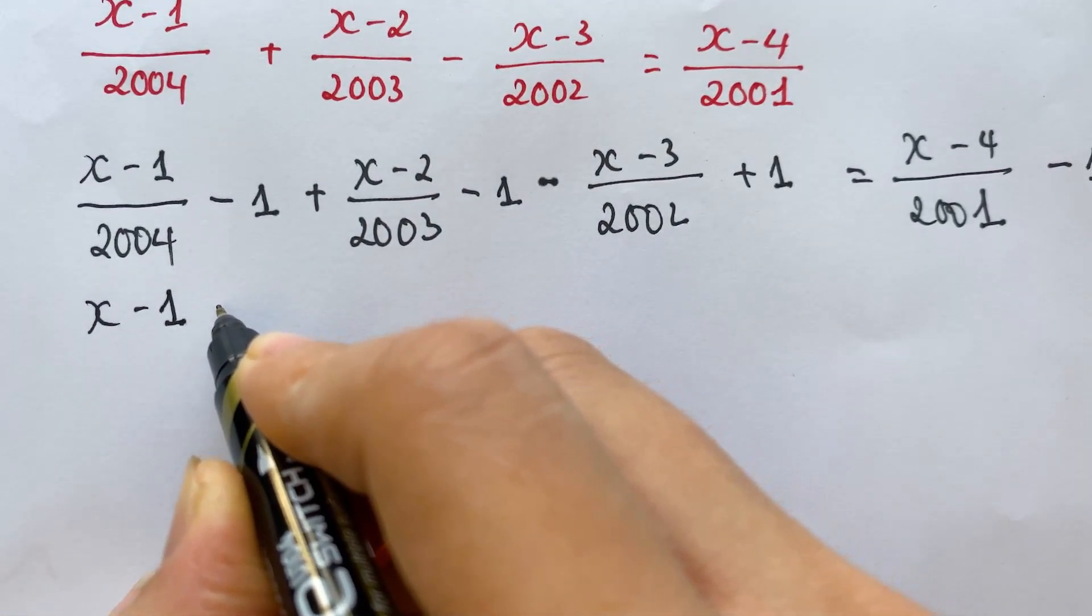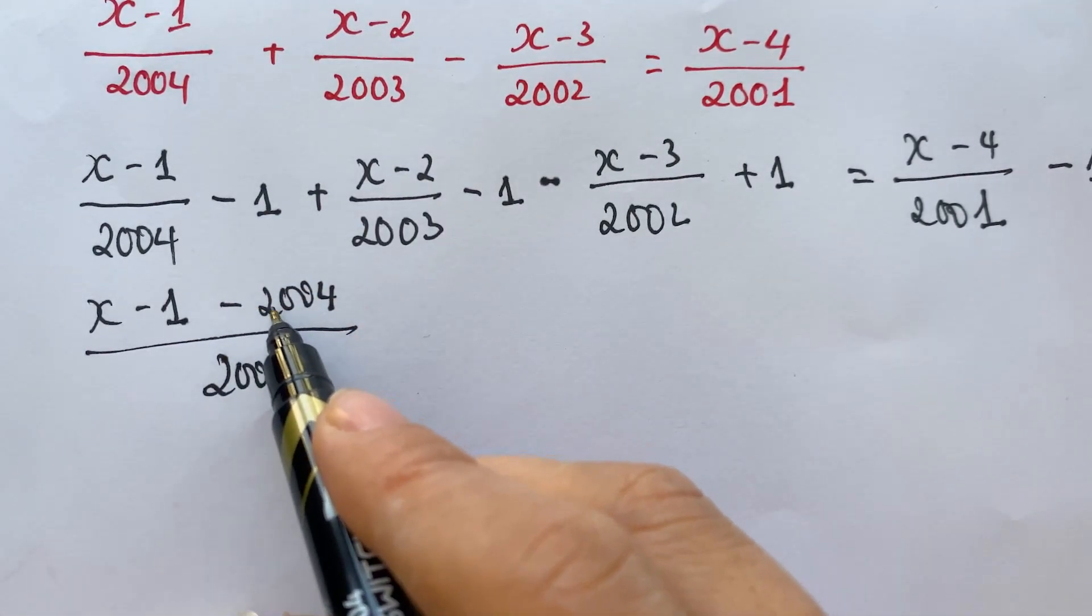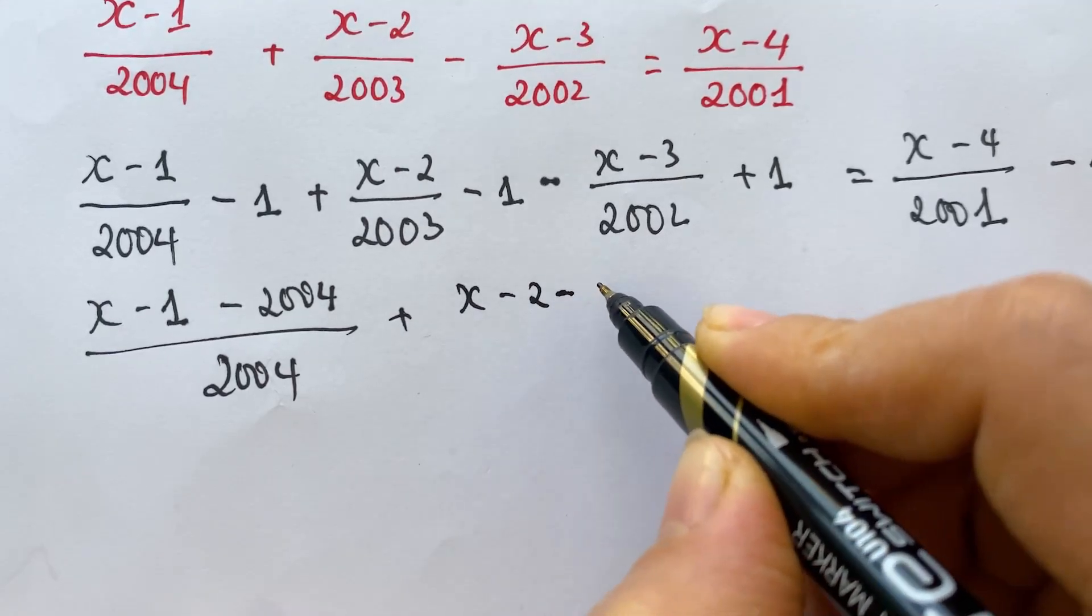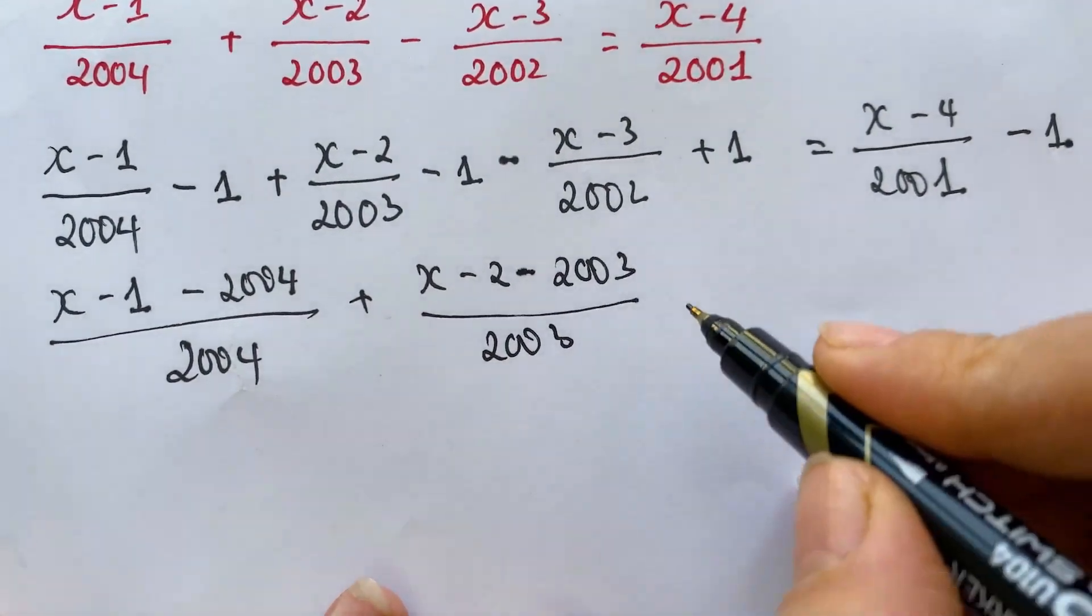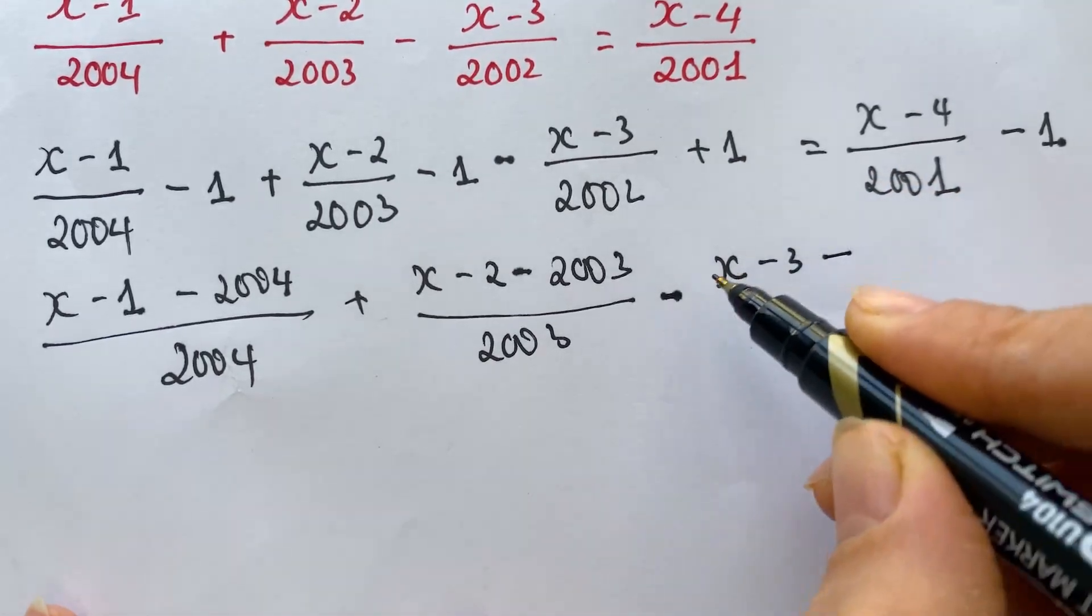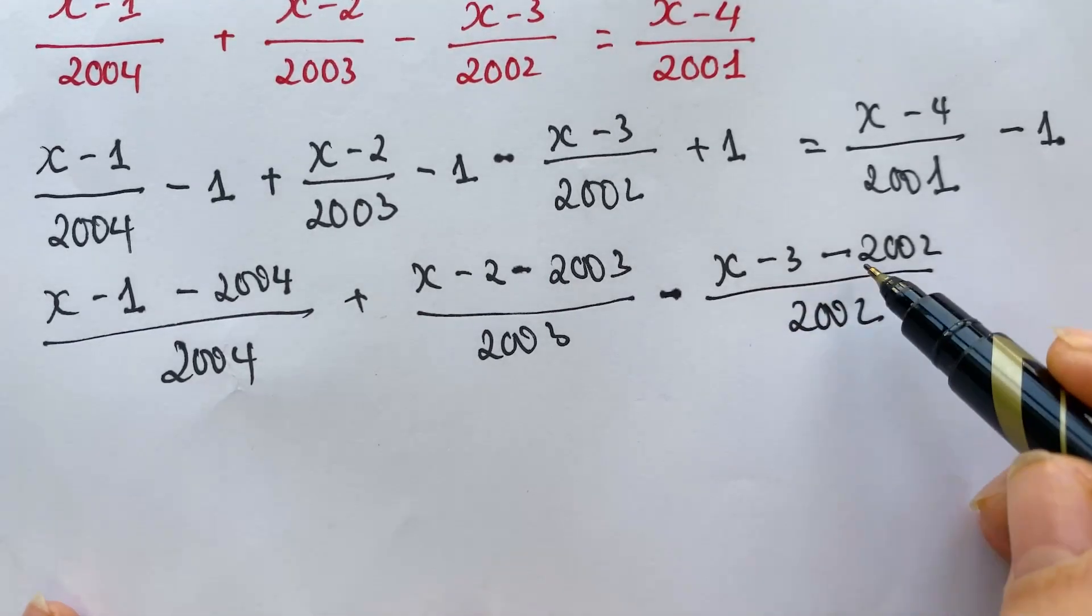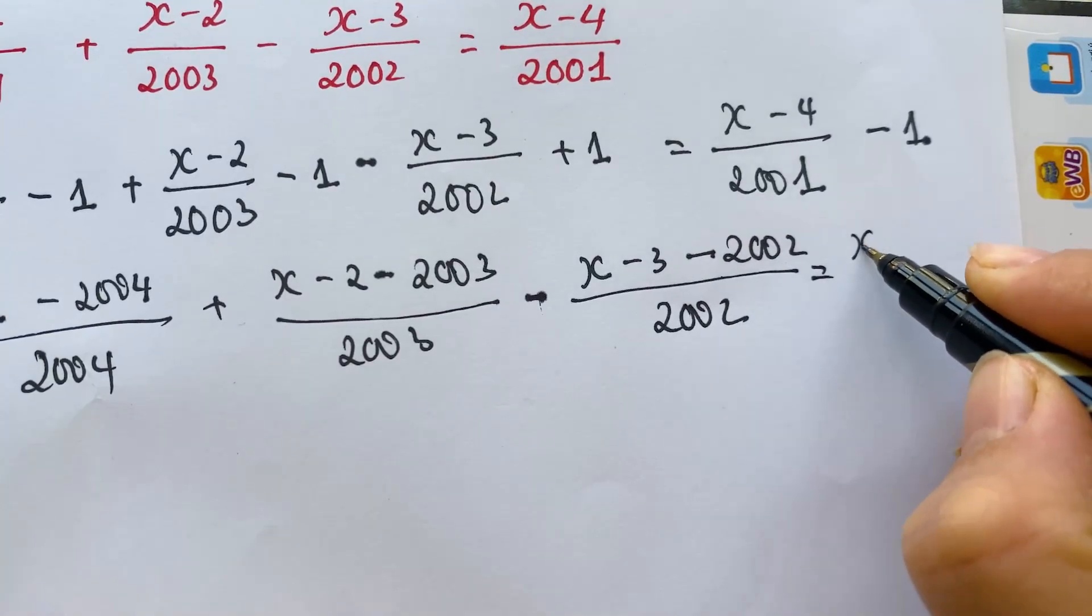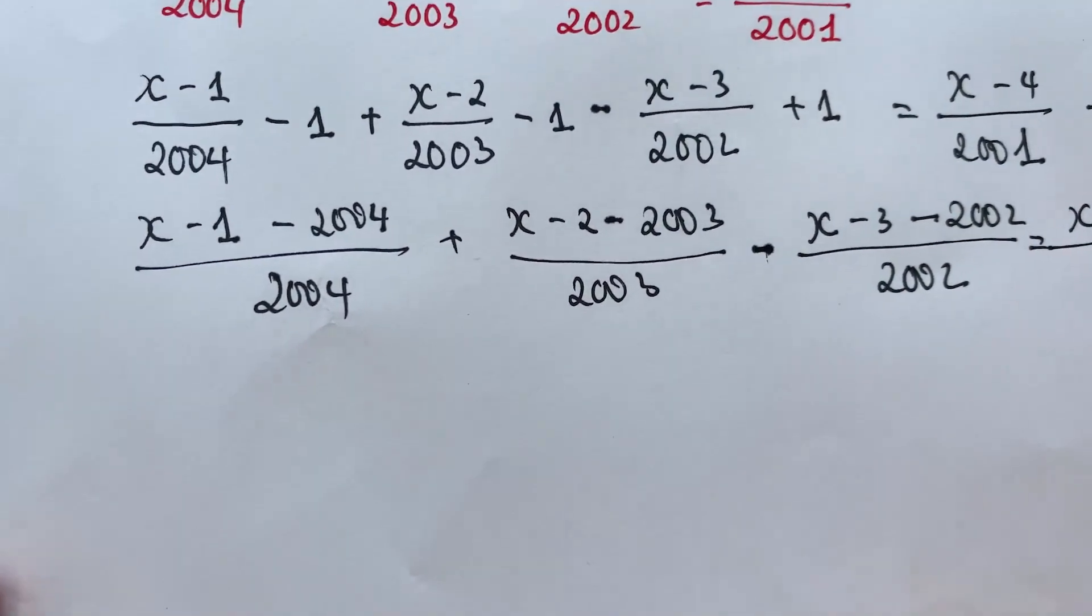x minus 1 over 2004, you can rewrite as 2004 over 2004, yes? Minus 1, you write minus 2004 over 2004. And plus x minus 2 minus 2003 over 2003. When you have minus here, x minus 3 minus 2002, minus minus equals plus, so you write plus 2002 over 2002. And it equals x minus 4 minus 2001 over 2001.